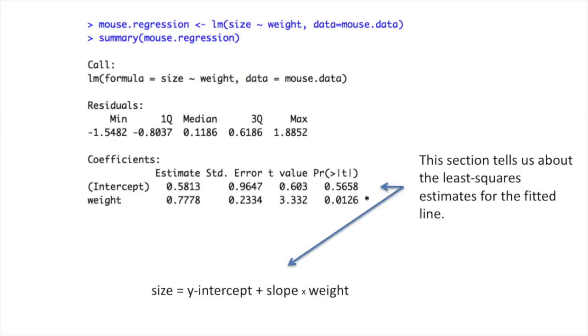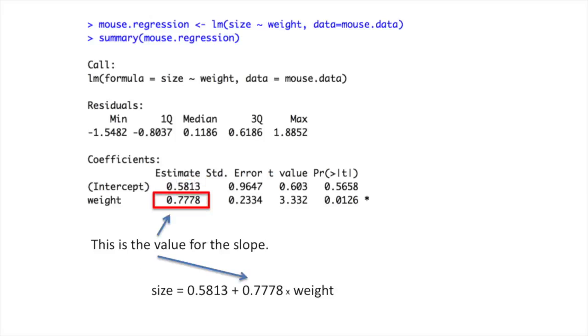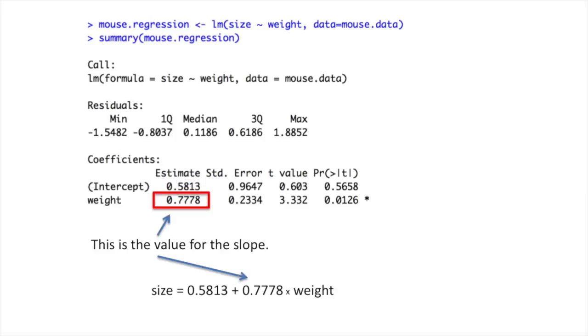This next section tells us about the least squares estimates for the fitted line. This value is for the intercept, and this value is for the slope. The standard error of the estimates and the t-value are both provided to show you how the p-values were calculated. These p-values test whether the estimates for the intercept and the slope are equal to zero or not. If they're equal to zero, that means they don't have much use in the model.